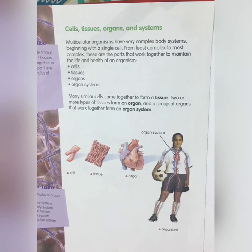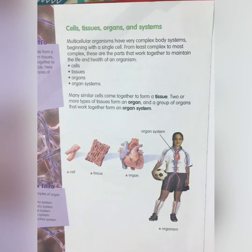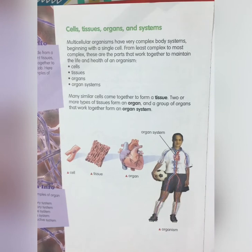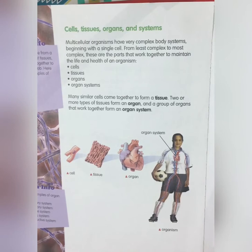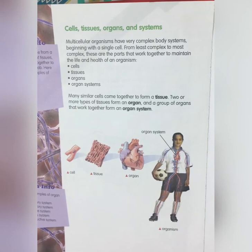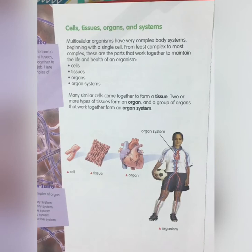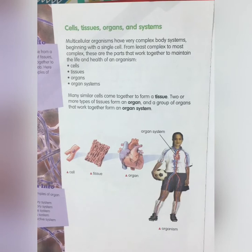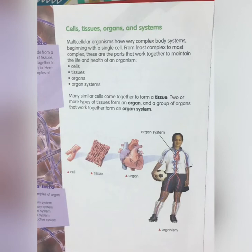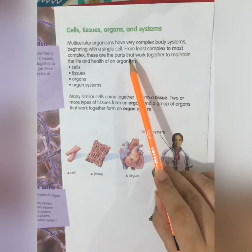As you all know, uni means one and multi means many. An organism which has one cell we call a unicellular organism, and an organism which has many cells we call a multicellular organism. Because there are more cells in multicellular organisms, our body systems are very complex — not as simple as unicellular organisms like amoeba, which has a very simple structure.